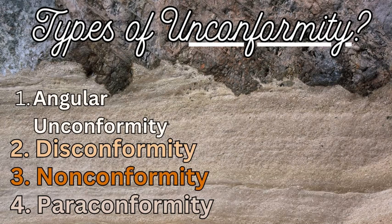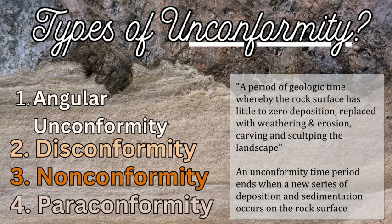A quick recap on what an unconformity is and the types. An unconformity is a period of time on the Earth's surface where there is zero or very small amounts of deposition, whereby erosion and weathering are paramount and sculpt the landscape. The types of unconformity are defined by where the erosion occurred, on what kind of rock, and what rock is then deposited above this unconformity.